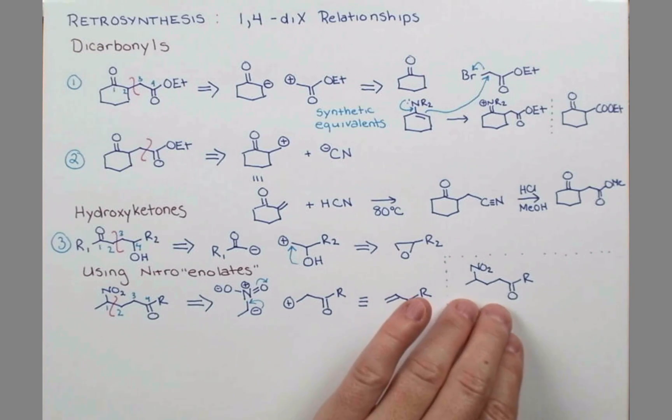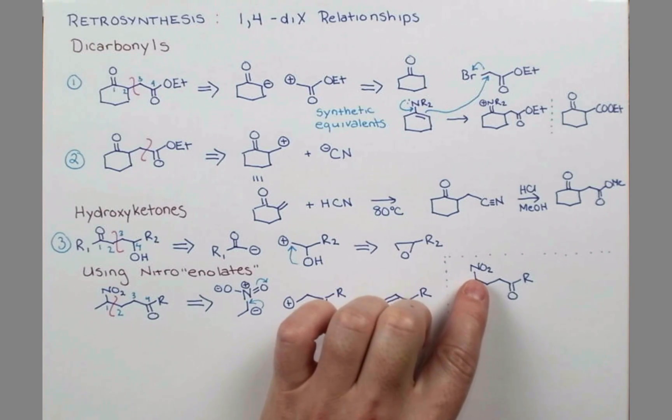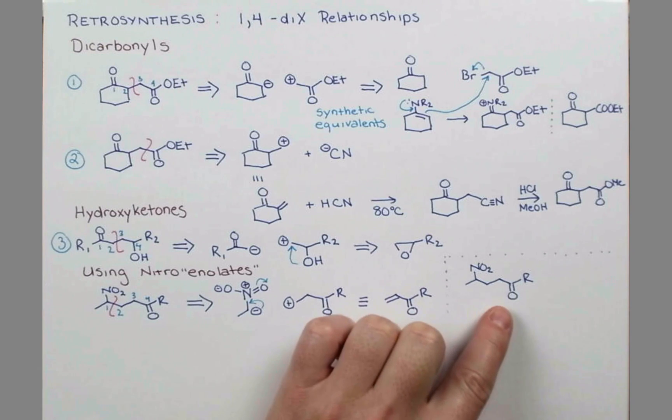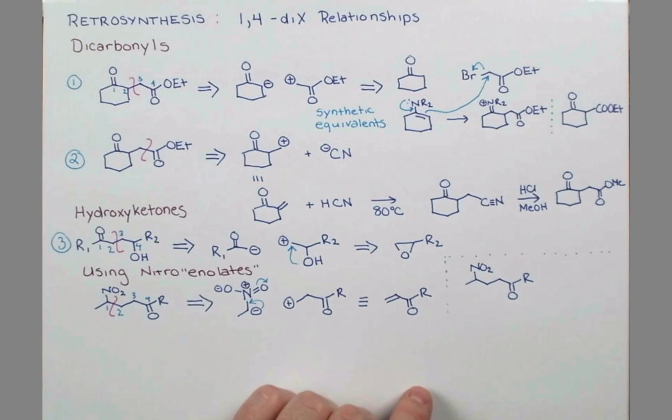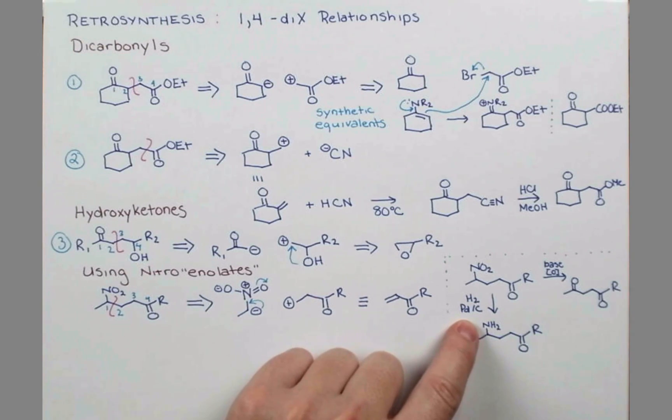Now there aren't a ton of natural products that actually contain the nitro group on it, so we might need to transform this into something else. Treatment with base and an oxidant can give dicarbonyl compounds. Imagine we reduce the nitro with, say, catalytic hydrogenation. Now we have an amine and a carbonyl in a 1,4 pattern. Once we reveal the amine, be careful because it could cyclize onto this carbonyl depending on what your R group is.